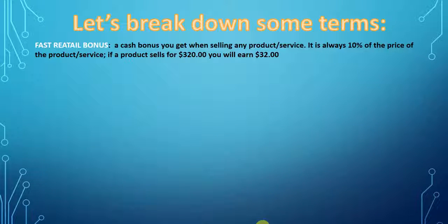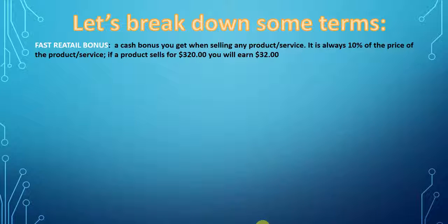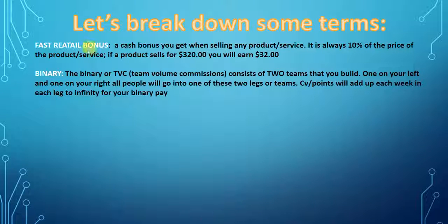Let's break down some terms before we start. Fast retail bonus: this is a cash bonus that you will get when personally selling any product or service. It is always 10% of the price of the product or service. So if we have a product that sells for $320, you would earn $32. Anytime someone renews a plan every month, this is also applicable — you're going to get 10% in cash.